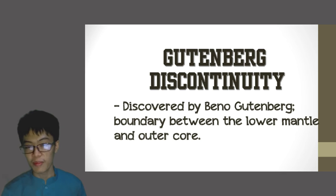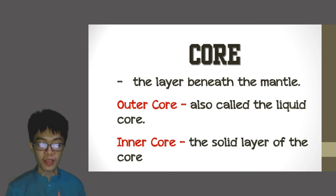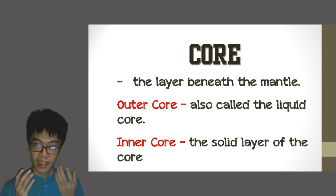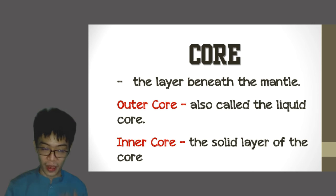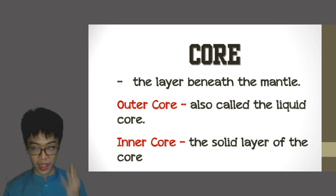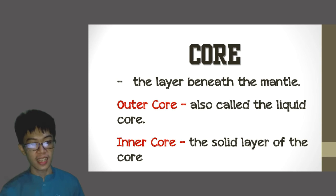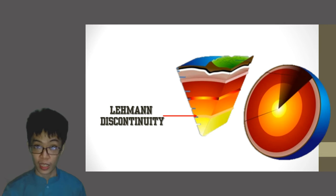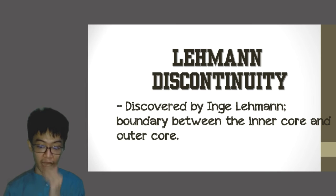After the mantle comes the outer core, which is liquid iron and nickel. The inner core, however, is a solid nickel and iron core. There is also a boundary between the outer core and the inner core called the Lehmann Discontinuity, discovered by Inge Lehmann — it is the boundary between the outer and inner core.